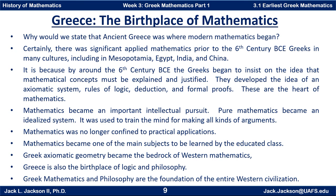Pure mathematics became an idealized system, used to train the mind for making all kinds of arguments. Mathematics was no longer confined to practical applications — though they certainly had those too. The way the Greeks looked at mathematics, it was something above and beyond practical use. Mathematics became one of the main subjects to be learned by the educated class. Greek axiomatic geometry in particular became the bedrock of Western mathematics. Greece is also the birthplace of logic and philosophy — those came hand in hand. The philosophers were also the logicians and the mathematicians, particularly the geometers. Greek mathematics and philosophy are ultimately the foundation of the entire Western civilization.